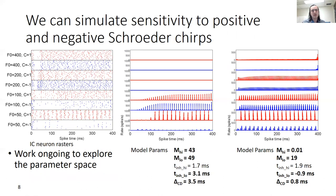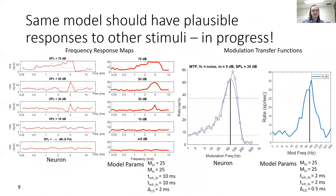We can also simulate cells selective for positive Schroeder chirps. Here we see a neuron selective for positive Schroeder chirps at lower fundamentals, but at higher fundamentals it responds to everything. The model mimics the selectivity fairly well at lower velocities, but isn't very good at capturing the higher F-naught regime where the cell responds equally well. This is a work in progress, and we need to continue exploring the parameter space and possibly add new inputs or model configurations. Ultimately, we want a model that can accurately match a given neuron's responses across various stimuli — including frequency response maps and modulation transfer functions.